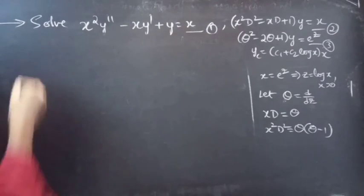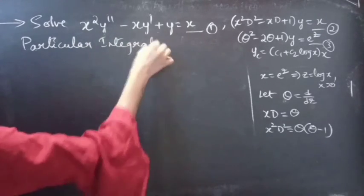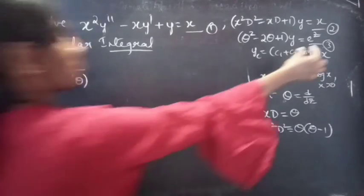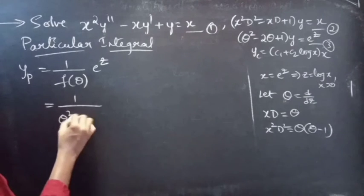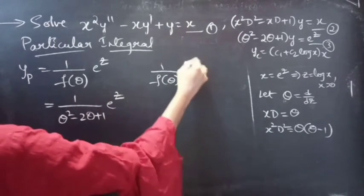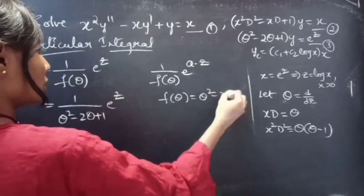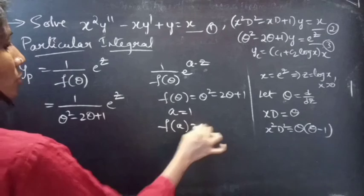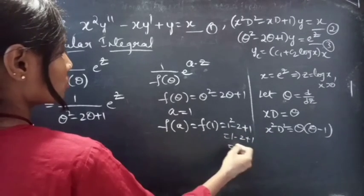Now let's find yp, the particular integral, using (1/f(theta)) e^z, where f(theta) equals theta squared minus 2 theta plus 1. This is of the form (1/f(theta)) e^(az) with a equals 1. We find f(1) equals 1 minus 2 plus 1 equals 0. Since f(1) equals 0, we cannot directly substitute.